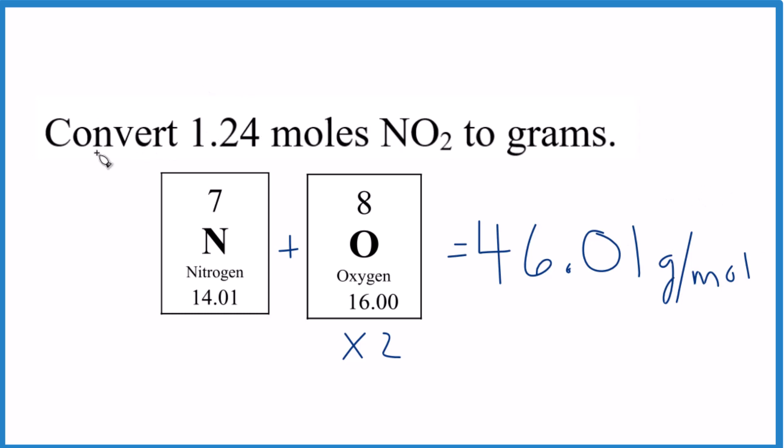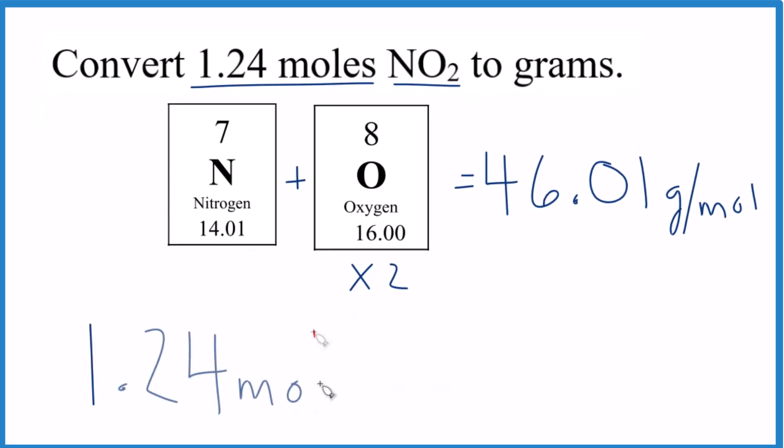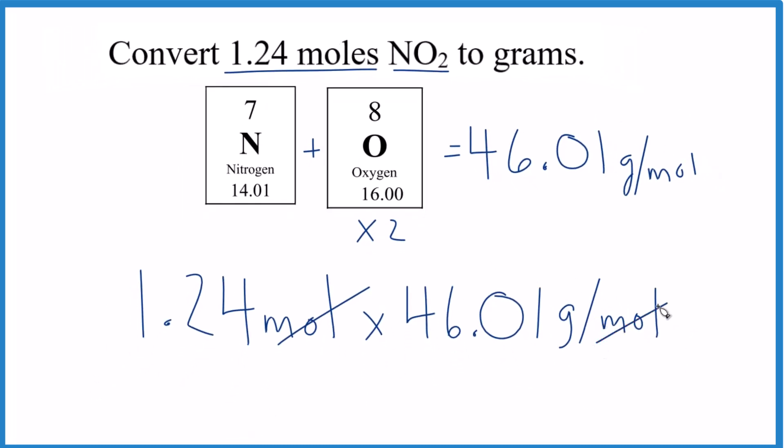So we have 1.24 moles of NO2. And this is often the abbreviation used for moles. And to get from moles to grams, we multiply by the molar mass here. So when we multiply, we have moles on the top and the bottom, they cancel out. We're going to be left with grams. So we've done this right because we're looking for grams.